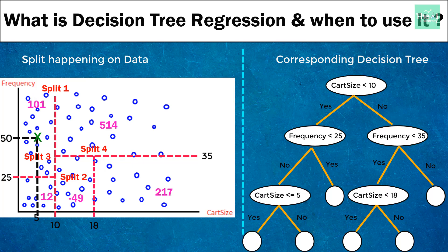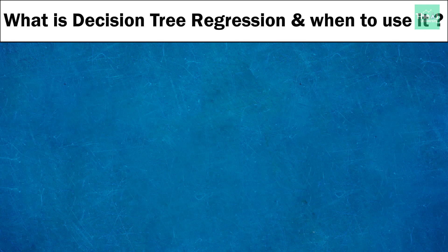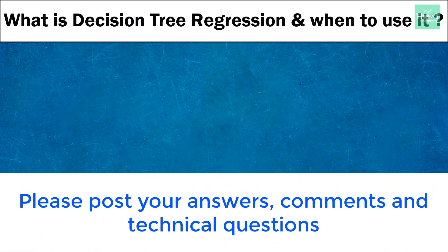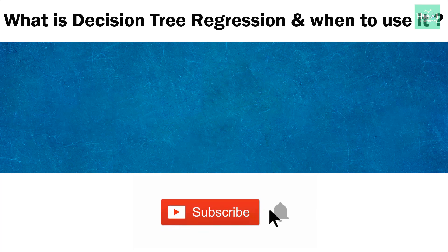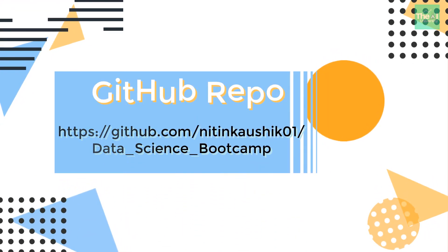So folks, this is it for this video. In the next upcoming video, I will show you how to develop and train a decision tree regression based machine learning model. Here is today's question: in order to predict the value of a new target variable, do we take the average or maximum value of all observations of a particular terminal leaf in the decision tree algorithm? Please post your answers and comments in the comment section. If you are not already a subscriber, consider clicking the subscribe button, and click on the bell icon to receive notifications whenever I release a new video. Thanks for hanging out with me — keep on watching!